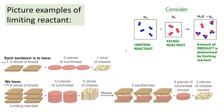How many sandwiches can you make? You'll run out of one ingredient first. Six slices of bread makes three sandwiches; 12 pieces of lunch meat makes four sandwiches; five slices of cheese makes five sandwiches. We can't really make five — we'll run out of bread. The bread is the limiting reactant because it runs out first and determines how many sandwiches we can make.